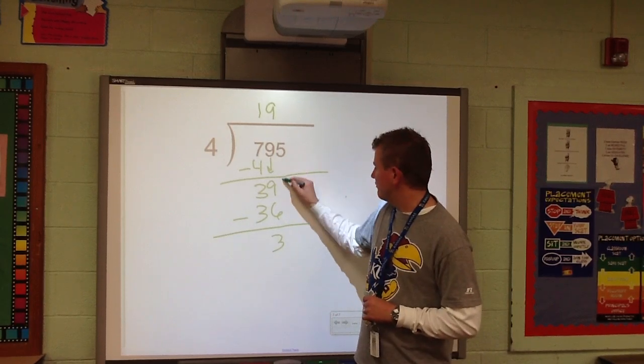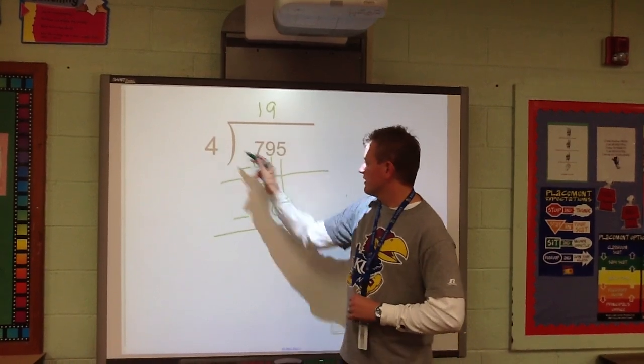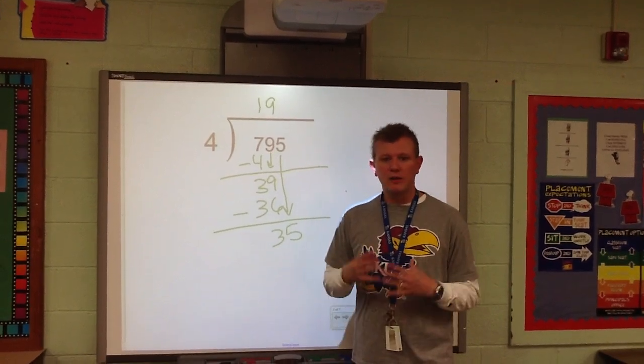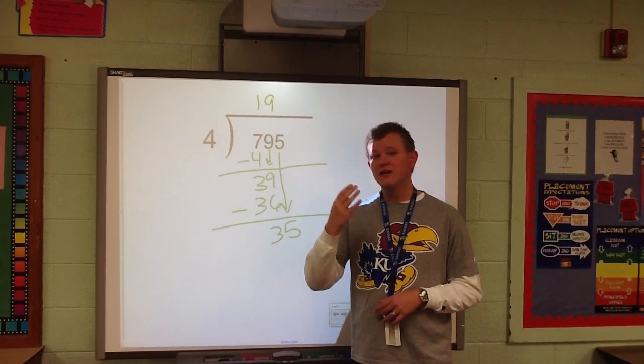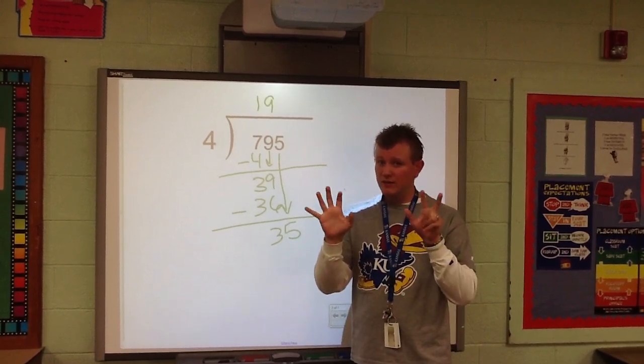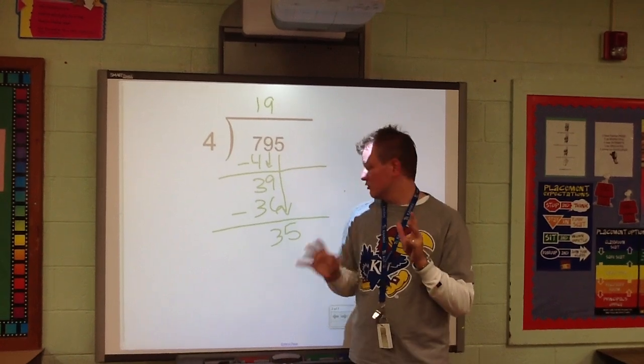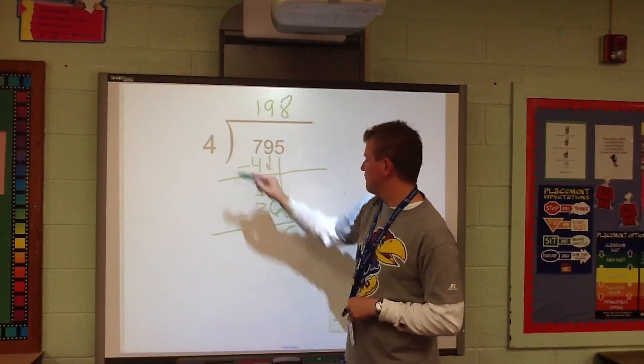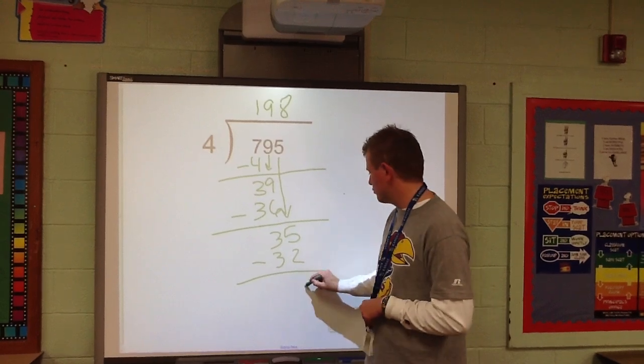And then I can't forget about my buddy, the 5 here. So, I'm going to bring it all the way down. It's going to take the elevator all the way down. So, I've got how many times does 4 go into 35? Well, let's say I'm not real strong with my math facts or my multiplication facts. You can still skip count. 4, 8, 12, 16, 20, 24, 28, 32. I'm at 8. 8 times 4 is 32. If I go one more to 9, that's 36. It's too high. So, I'm going to stick with 8. I'm going to put it up top. 8 times 4 is 32. 35 minus 32 is 3.